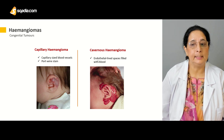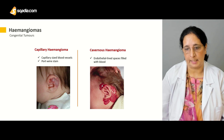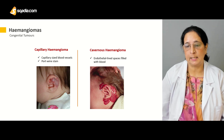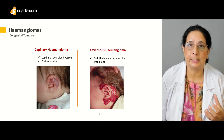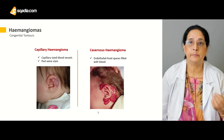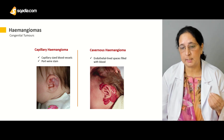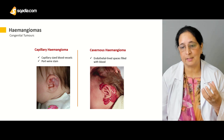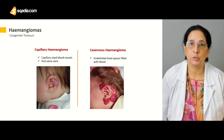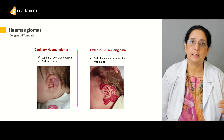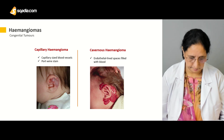Cavernous hemangiomas develop from endothelial-lined spaces filled with blood. When the blood vessels become dilated in those spaces and fill with blood, they give a very bright red appearance. These are congenital tumors and slowly start disappearing or fading, usually within the first six months.